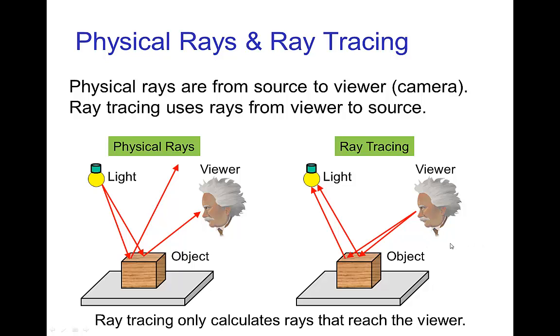So it's more convenient to trace those rays that come from the viewer to different points in the object and see what ray corresponds to the one that goes back to the light source. In other words, we only calculate the light rays that actually reach the viewer or the camera.